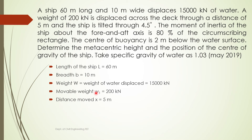From the given data we can identify which formula to use. We have studied two formulas for finding GM: one based on analytical derivation and the other based on the experimental method. Since the weight moved and the distance through which it was moved are given, this problem uses the experimental equation. The angle through which the ship is tilted is θ = 4.5 degrees.